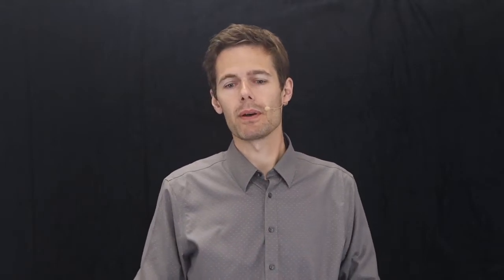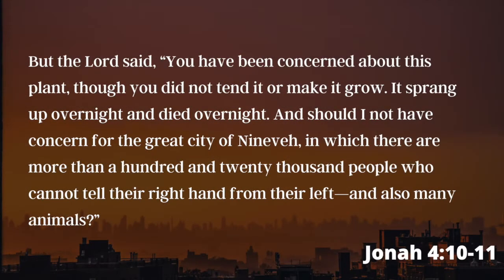And then God revealed the point of his object lesson. Listen to what God says in verse 10 and 11. God says, Jonah, you have been concerned about this plant, though you did not tend to it or make it grow. It sprang up overnight and it died overnight. And should I not have concern for that great city of Nineveh in which there are more than 120,000 people who cannot tell their right hand from their left and also many animals.